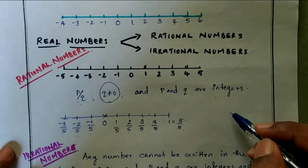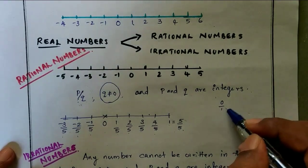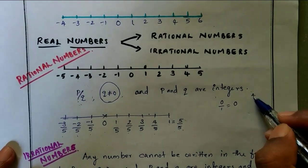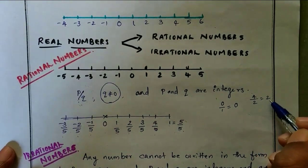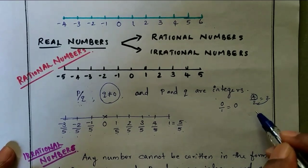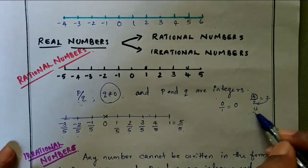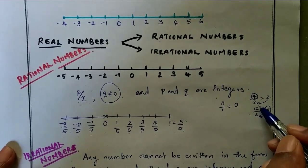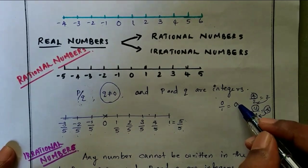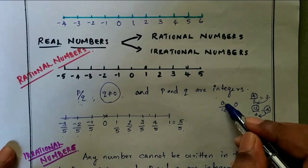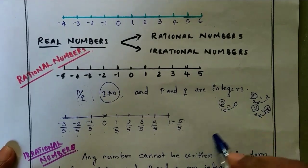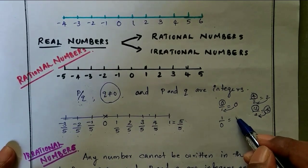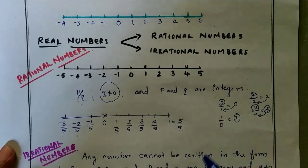How do we consider q not equal to zero? For example, zero by one equals zero. But one by zero is undefined — that answer is undefined. That is why we say q cannot be equal to zero in the definition of rational numbers.